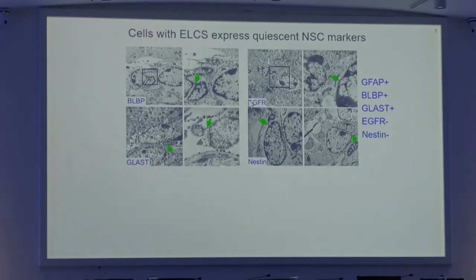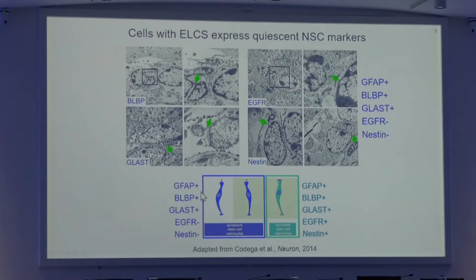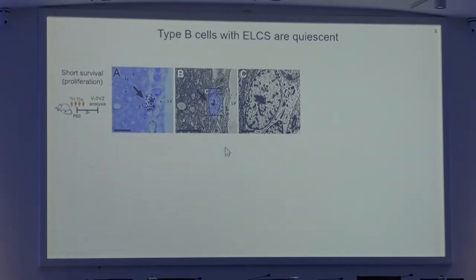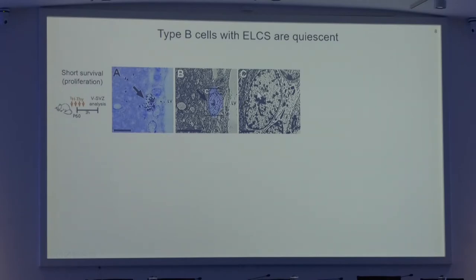We next asked what was the molecular phenotype of the cells presenting ELCs. Using immune electron microscopy with antibodies conjugated to gold particles, we found that they were GFAP, BLBP, class-positive, while they were EGFR and nestin-negative — presenting exactly the same molecular phenotype as quiescent neural stem cells in the ventricular subventricular zone. To confirm that cells with ELCs are actually quiescent neural stem cells, we carried out proliferation studies with tritiated thymidine, which is incorporated by dividing cells. After identifying these proliferating cells in semithin sections, we followed them in the electron microscope and found that none of the dividing cells presented ELCs, supporting the notion that cells with ELCs are quiescent.